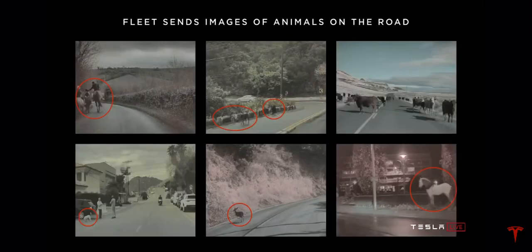Here's another example — animals. Of course, also a very rare occurrence, but we want the neural network to really understand what's going on, that these are animals, and we want to deal with that correctly.